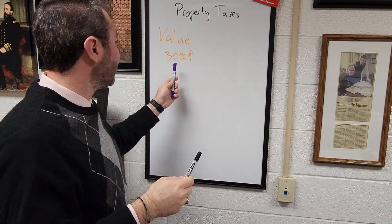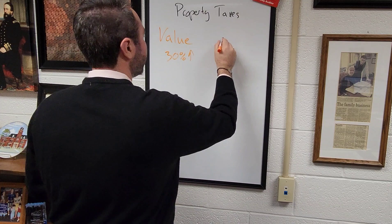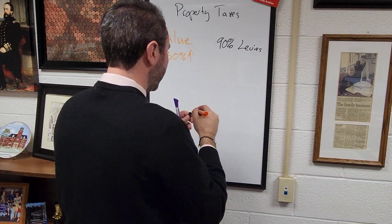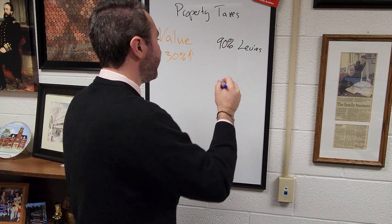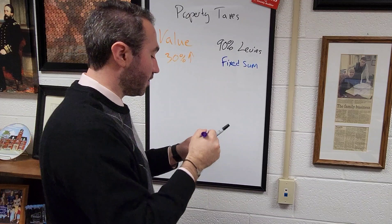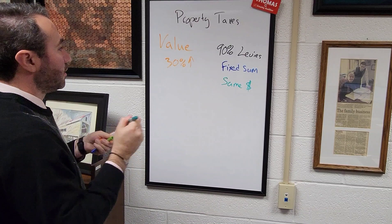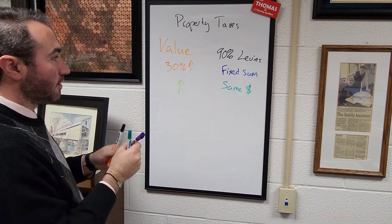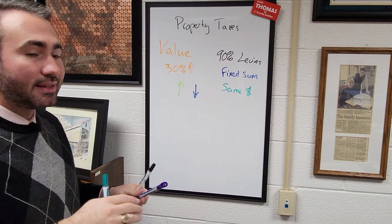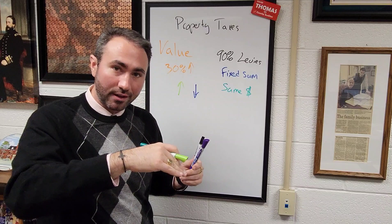So what we do is we'll take your value. About 90 percent of the levies on your tax distribution are actually what's called a fixed sum levy. Fixed sum means that the same revenue year over year comes in for the local entities — it's the same money. So as values go up, we actually decrease most of the tax rates in the county to bring in the same amount of revenue for all of those levies. Think of it as: if you make more money but still pay the same amount of income tax, that means the income tax rate was decreased to offset you making more money. That's about 90 percent of your levies.